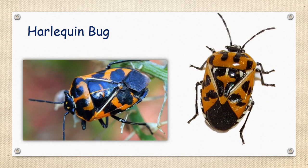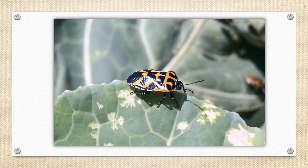The harlequin bug. Some of you may have heard of the character Harley Quinn in the comics or movies, and if you know anything about that character, you know she's not very good. So you can probably take a good guess on whether this one is a friend or a foe. It is a foe, because of the damage it can do to our plants and crops. If you look at this leaf, you can see several spots on it — those spots are a result of the damage that insect is doing to the plant.